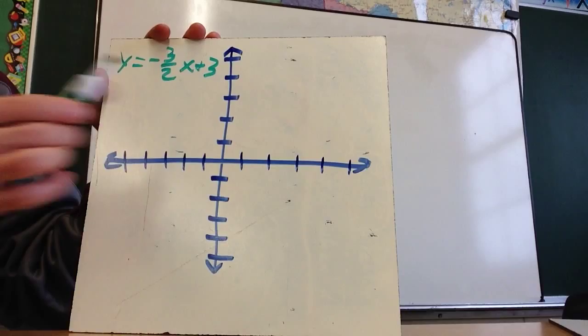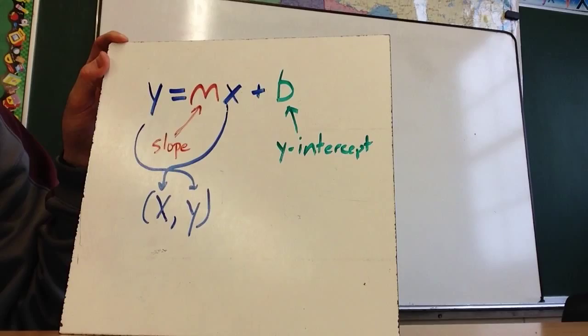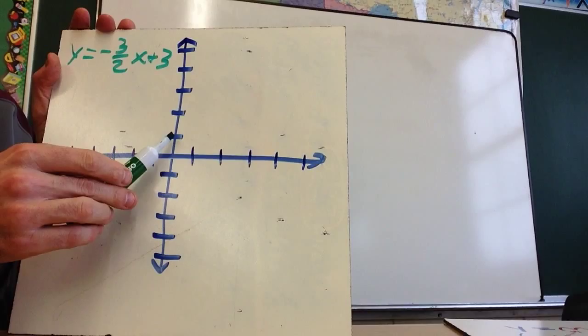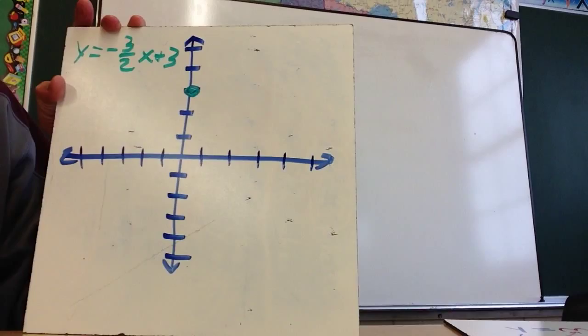So the easiest way for me to graph this is to start by using the b. So keep in mind, I'm going to come back to this in a second, b is my y-intercept. So that is, where does it cross the y-axis? So it crosses at positive 3. So I'm going to go 1, 2, 3, and that's going to be my first point.